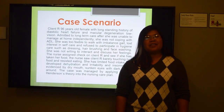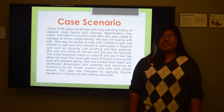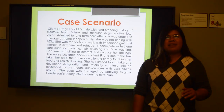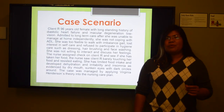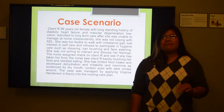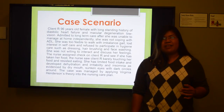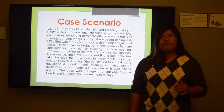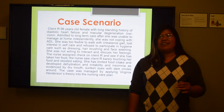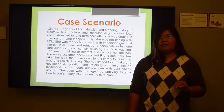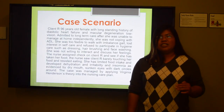For the case scenario, we have Client R, a 96-year-old female with a long-standing history of diastolic heart failure and macular degeneration with low vision. She was admitted to long-term care after being unable to manage at home independently, not coping with activities of daily living. She was too feeble to walk with imbalanced gait, lost interest in self-care, refused to participate in hygiene care such as dressing, hair brushing, and face washing, and was not willing to interact and discuss her feelings. The nurse found her barely touching her food, and she developed dehydration, irritability, and insomnia as evidenced by dry mouth and sunken eyes with dark circles. The case was managed by applying Virginia Henderson's theory into the nursing care plan.